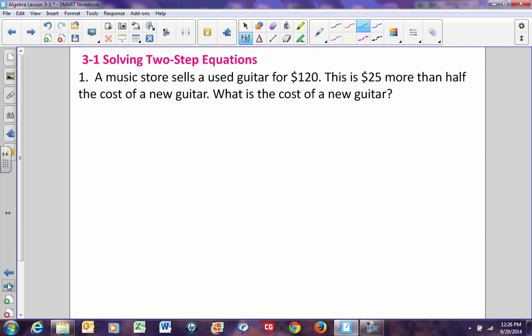Now, let's take a look at a word problem. A music store sells a used guitar for $120. This is $25 more than half the cost of a new guitar. What is the cost of a new guitar? I know several of these problems you could probably solve without having to define a variable and write an equation, but the whole process is you're supposed to define a variable and write an equation. The first thing I'm going to do is define a variable based upon what I am looking for. I am looking for the cost of a new guitar. So I'm going to let c equal the cost of a new guitar.